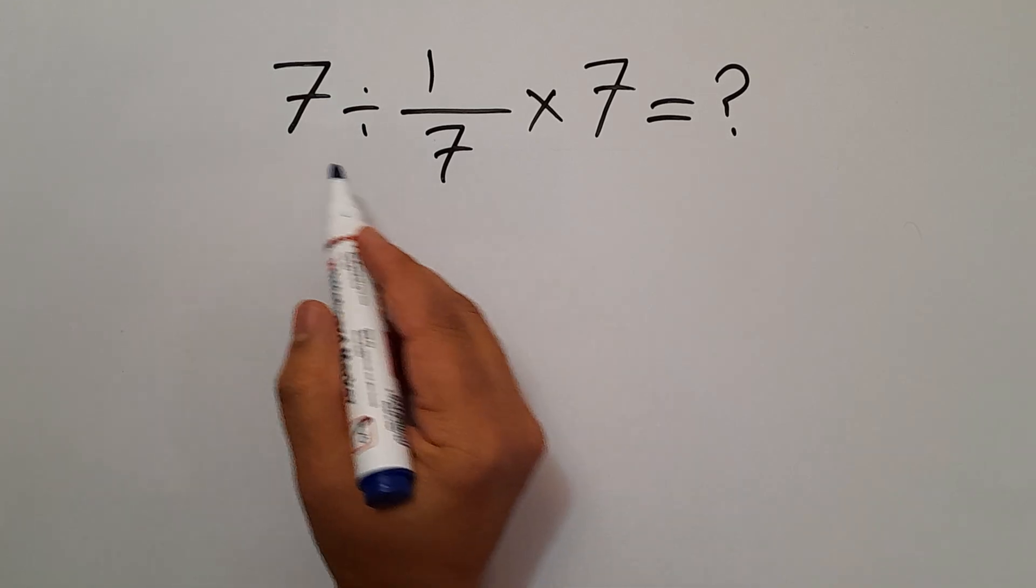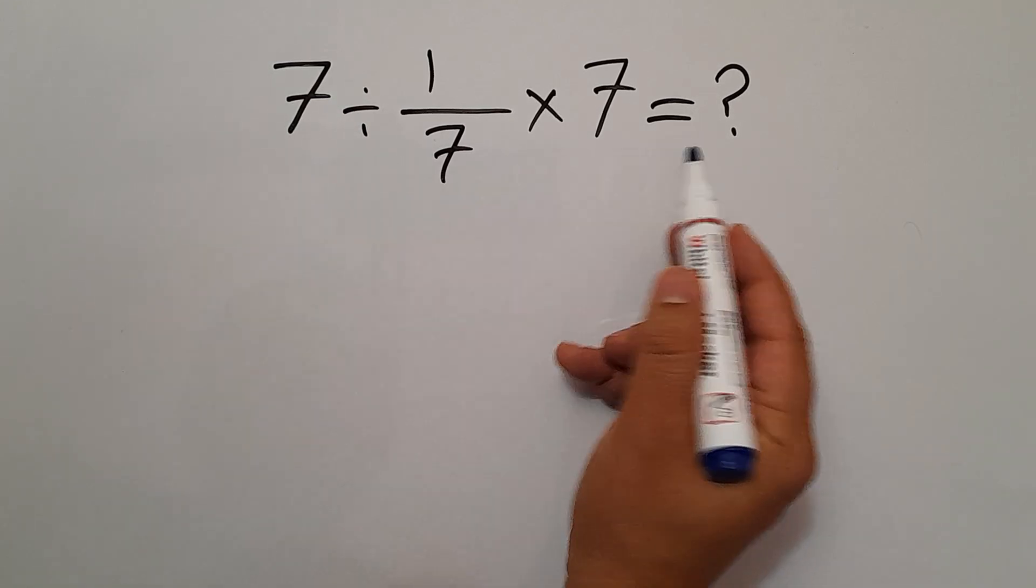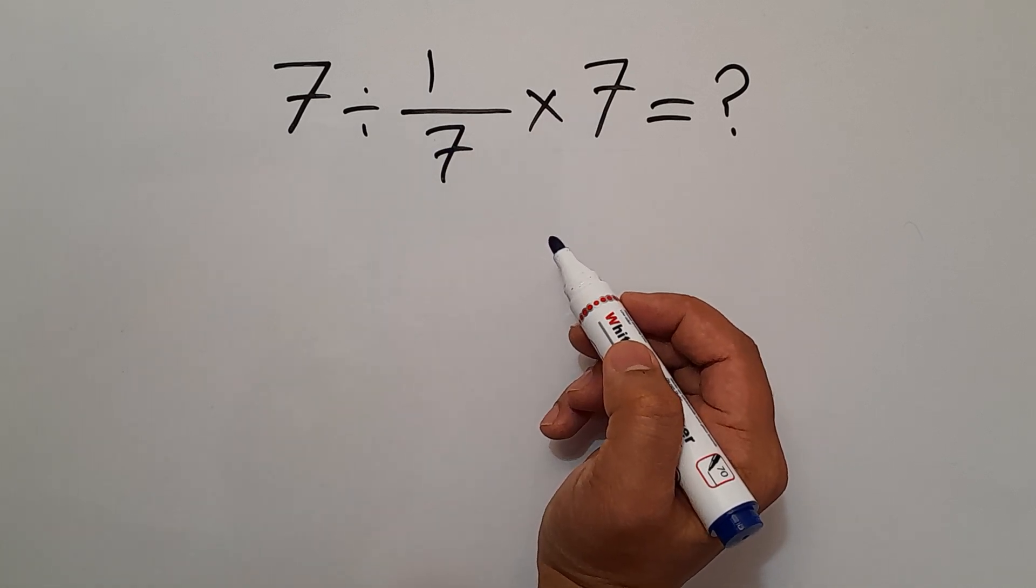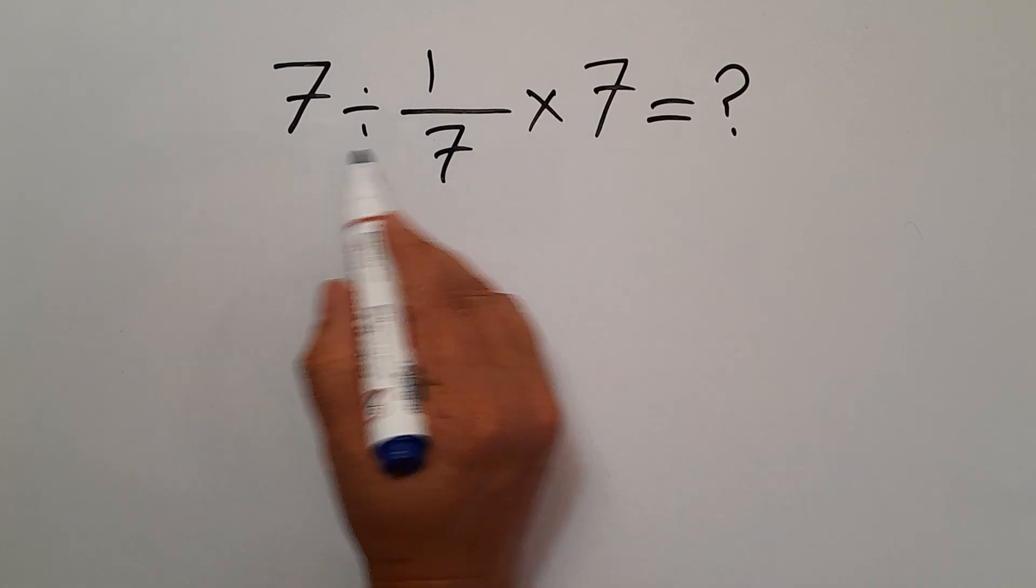Hey guys, welcome to Math Joy. In this video we want to find the value of this expression: 7 divided by 1 over 7 times 7. Are you ready to solve? Let's go.